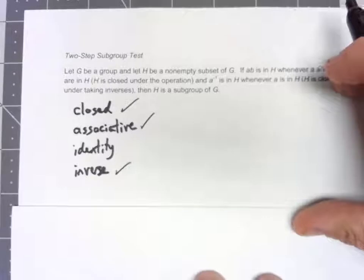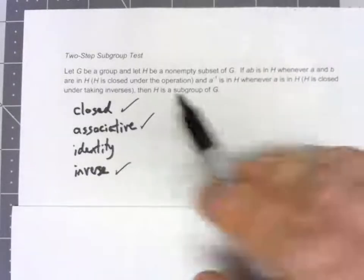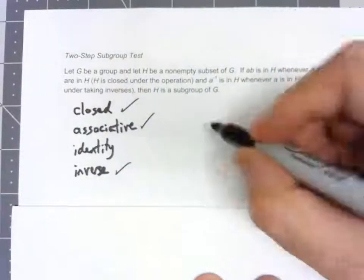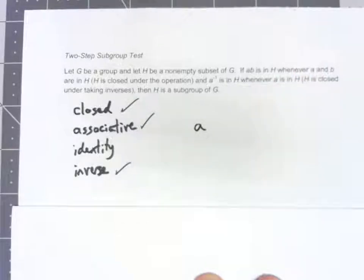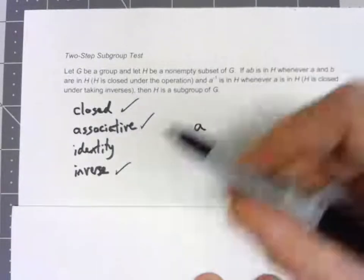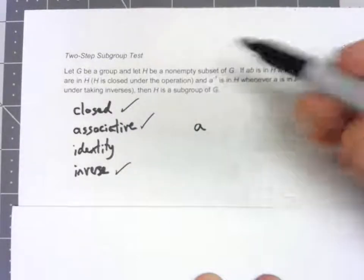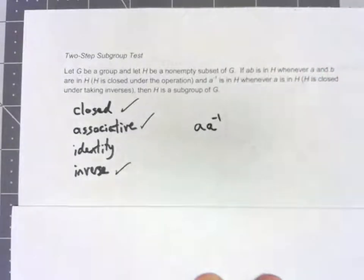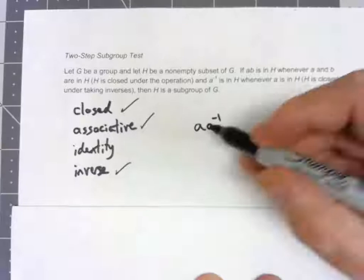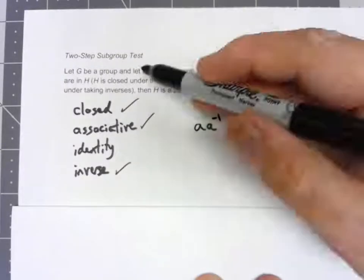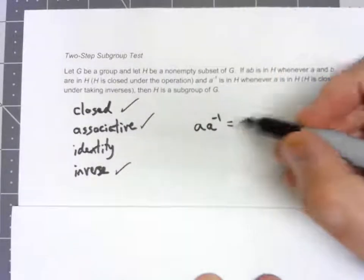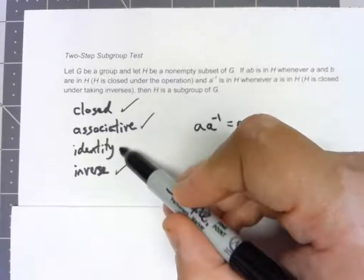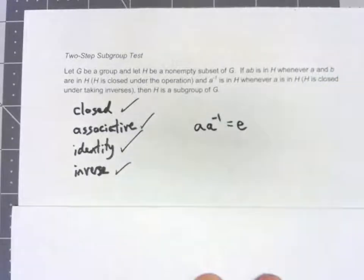And the identity follows from what we have. We know it's not empty, so there's at least one element in there. We know it's closed under inverses. So, if A is in there, A inverse is in there. And if A and A inverse are in there, we're assuming that it's closed under the operation. So, when I multiply them, I get the identity. So, the identity has to be in there.